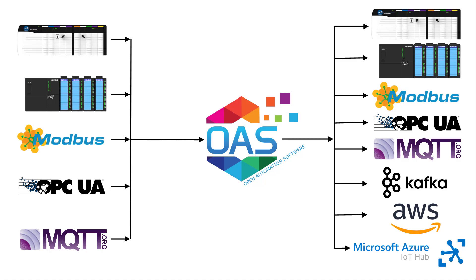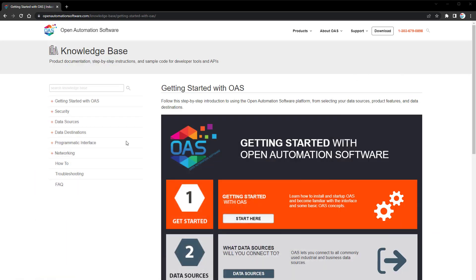In this video presentation, we're going to discuss how to transfer data from Industry 4.0 data sources to other Industry 4.0 data sources and to IoT cloud systems using the multiple tag write feature. This is configurable using the Configure OAS application programmatically through the REST API or through a .NET application. There are three ways that we can use the data route feature, and they can be reviewed under the knowledge base at Open Automation Software.